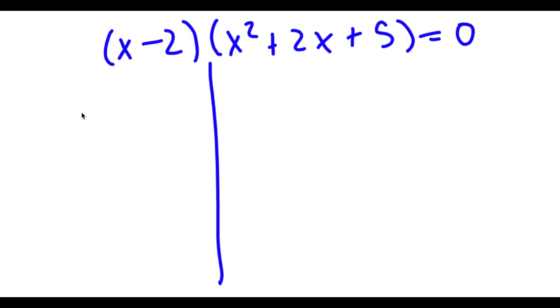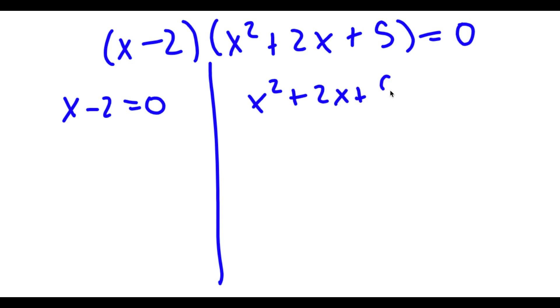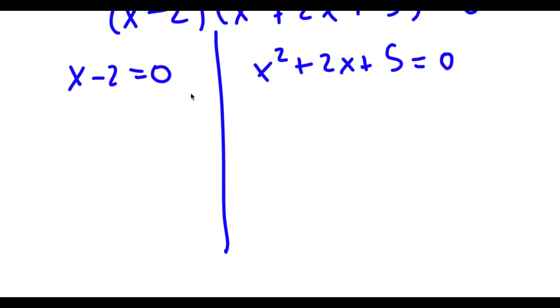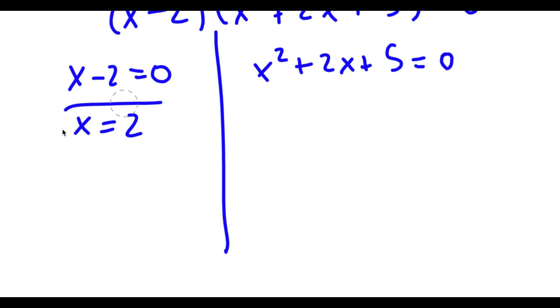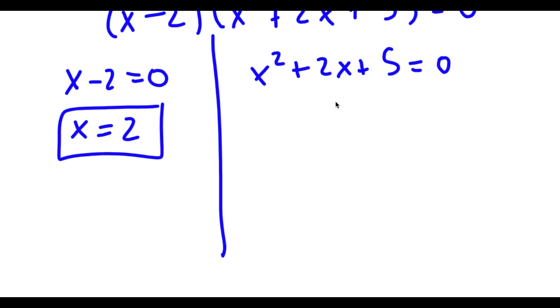So now to solve this, I have two equations. I get x minus 2 is equal to 0, and x squared plus 2x plus 5 is equal to 0. For x minus 2 equals 0, x is obviously equal to 2, so this is one solution.